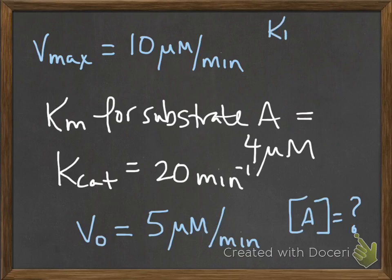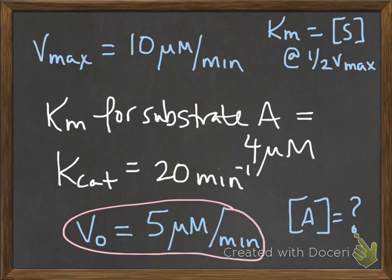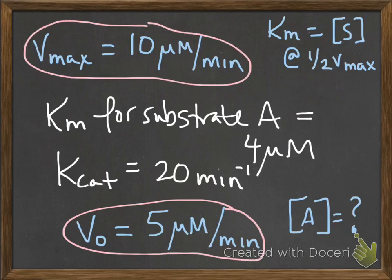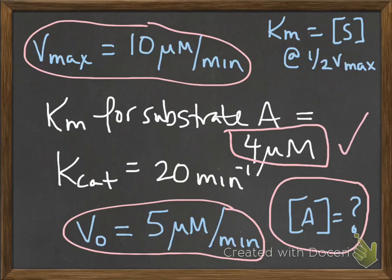Remember, KM is the substrate concentration at half Vmax. So if this is half of Vmax, then your substrate concentration will be your value for KM. So your answer is 4 micromolar for part B.